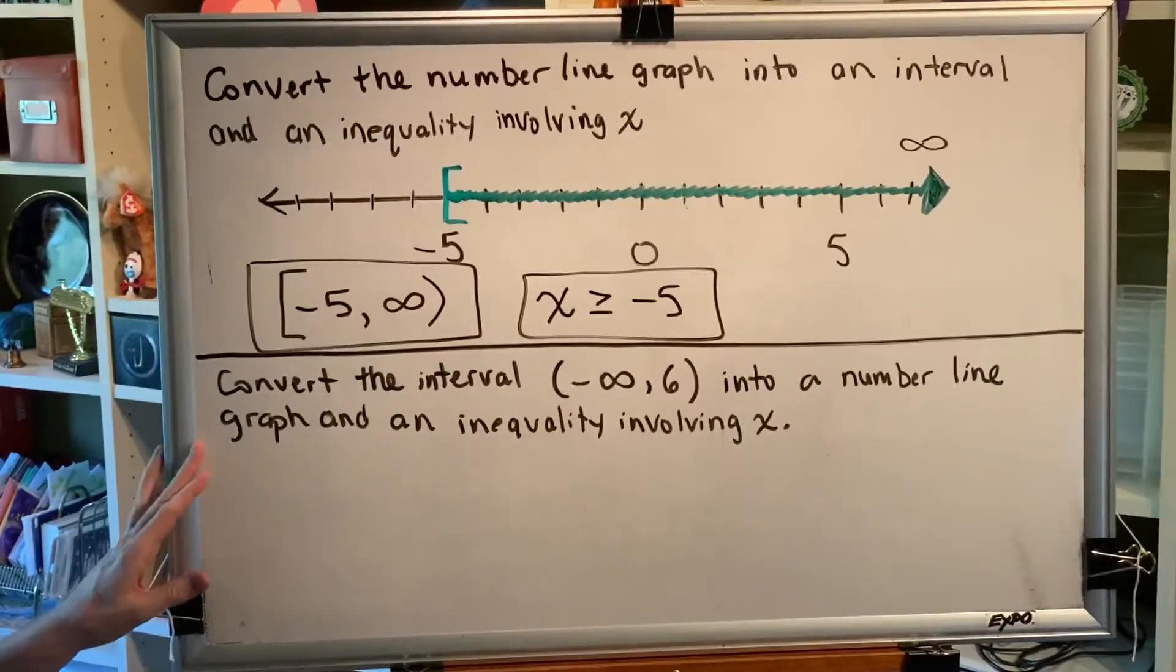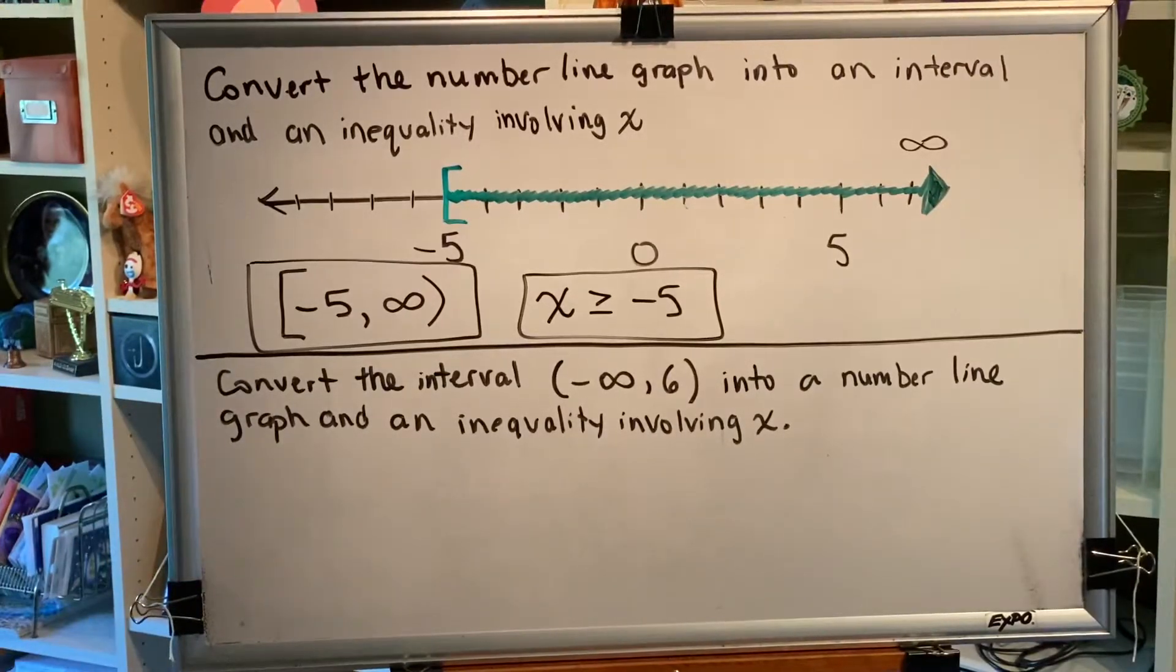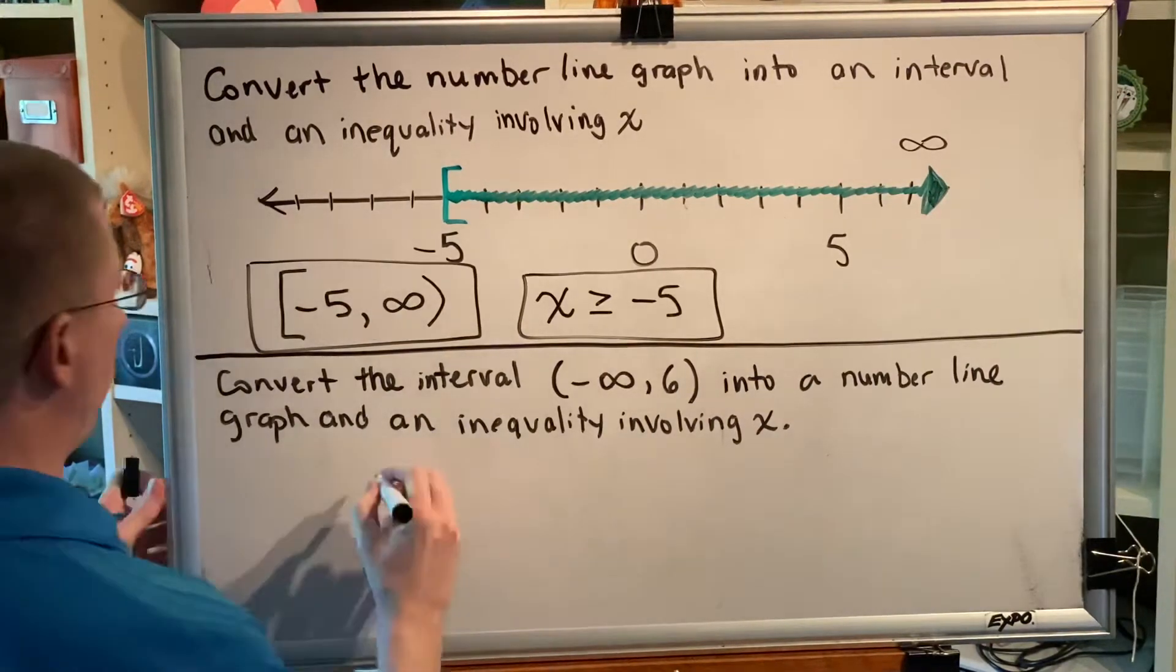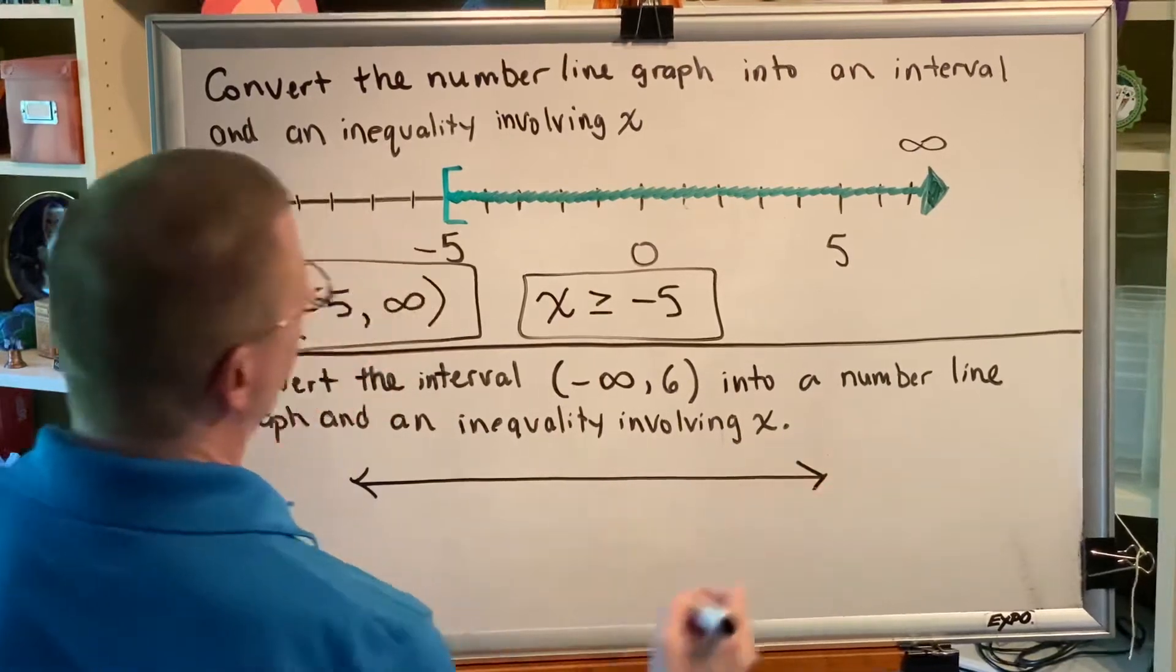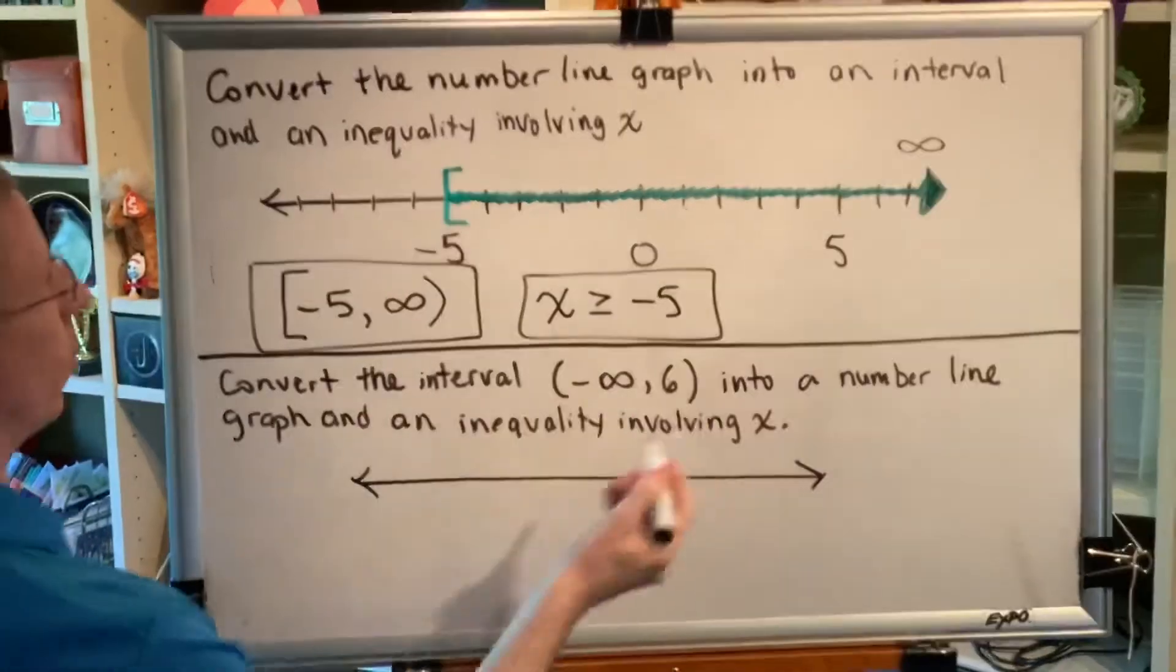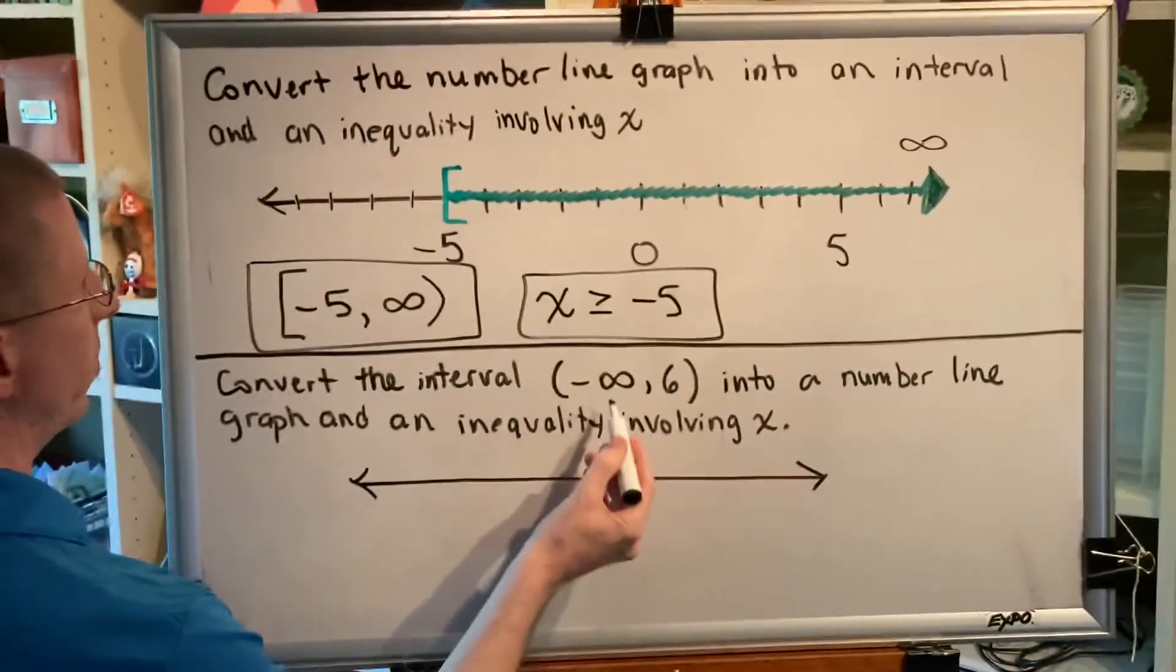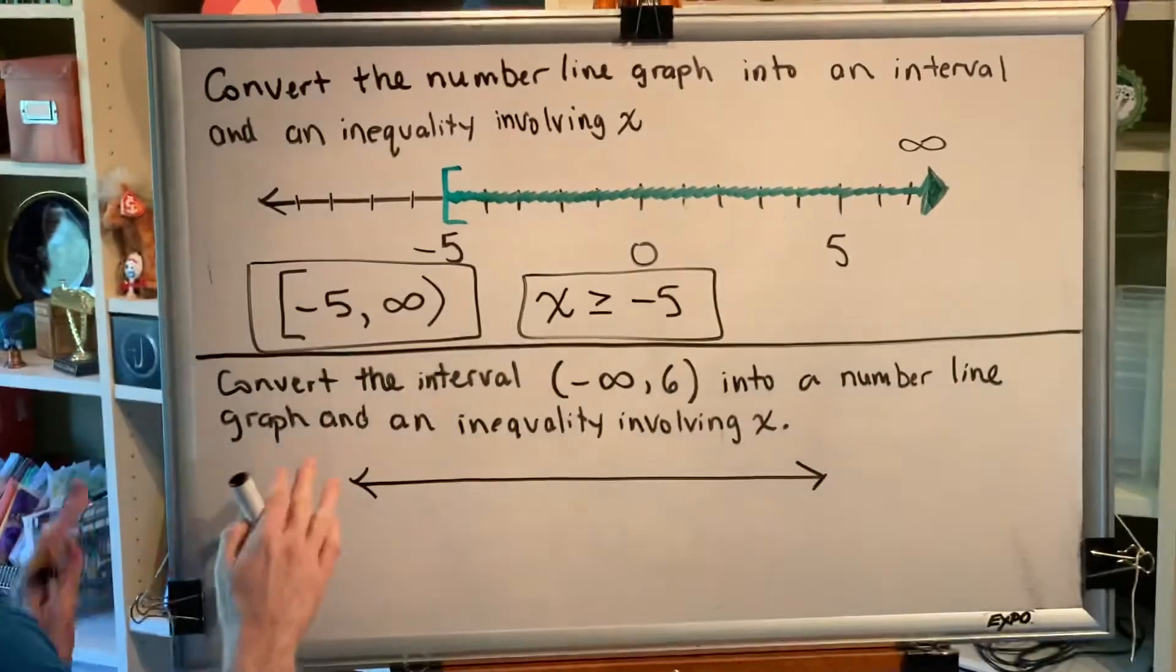Okay, let's move on to our next problem. Convert the interval negative infinity comma 6 into a number line graph and an inequality involving x. All right, first let's make it into a number line graph. An interval tells us the smallest and largest numbers.